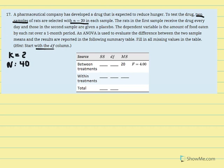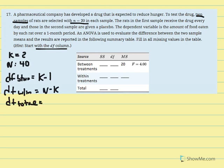We have two samples, so k equals 2. Each sample has 20 rats, so N equals 2 times 20 equals 40. Working with the DF column first, DF between equals k minus 1, DF within equals N minus k, and DF total equals N minus 1. Given k equals 2, DF between equals 2 minus 1 equals 1.